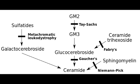Describe how arylsulfatase A deficiency can lead to Metachromatic Leukodystrophy. With arylsulfatase A deficiency, there is a buildup of sulfatides, and this leads to impaired production of the myelin sheath.